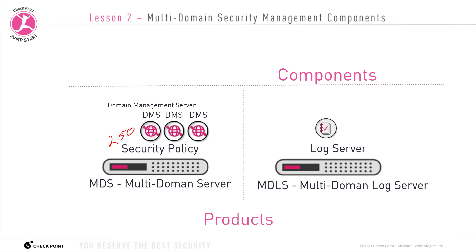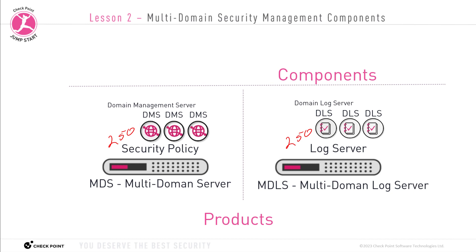Correspondingly, an MDLS server — the multi-domain log server — will also house up to 250 log server domains. Each log server domain on the MDLS server is called a DLS, a domain log server. A multi-domain log server's sole function is to store the logs for all the security gateways from all the security domains. Even though the MDLS server contains all the logs, you need a specific DLS for each domain. Each DLS stores logs separately and compartmentalized — only for a specific domain — in separate containers, directories, and folders.